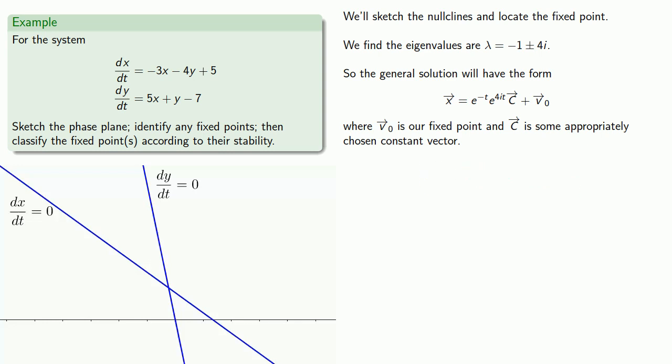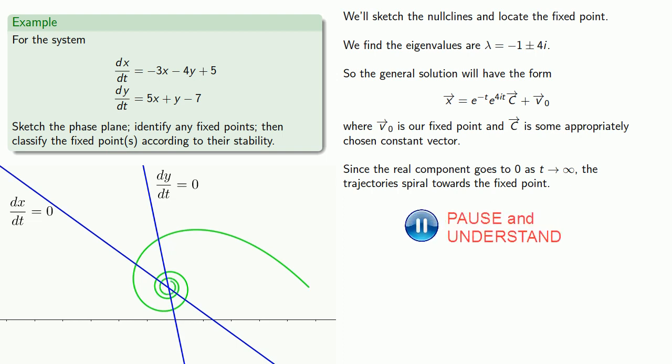Since the real component goes to zero as t goes to infinity, the trajectories are going to spiral in towards the fixed point.